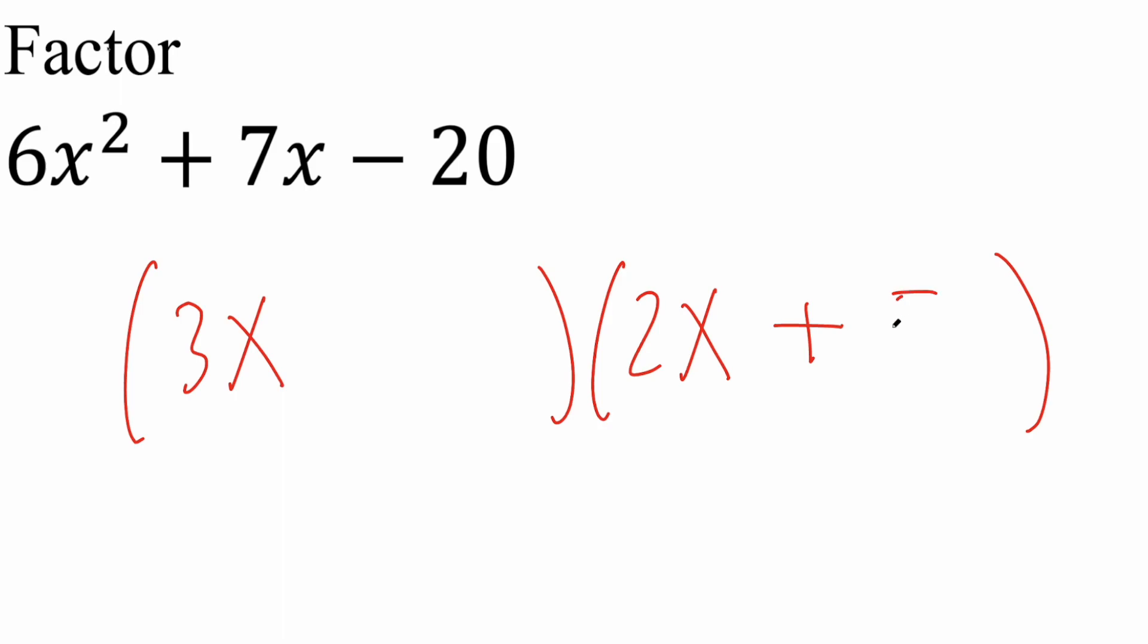Let's try plus 5 and we'll try negative 4. So 3x times 5 is 15x. 2x times negative 4 is negative 8x. 15x minus 8x is in fact 7x. So this right here is correct.